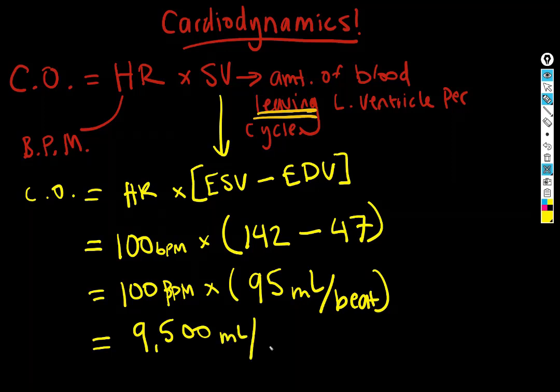That gives us 9,500 milliliters of blood moved out of the left ventricle per minute. Reduced down, that is nine and a half liters per minute. Think of a two-liter bottle of soda — multiply by four to get eight liters, then add another liter and a half. That's how much blood is being moved out of the left ventricle per minute. Impressive, right? That's cardiodynamics in action.